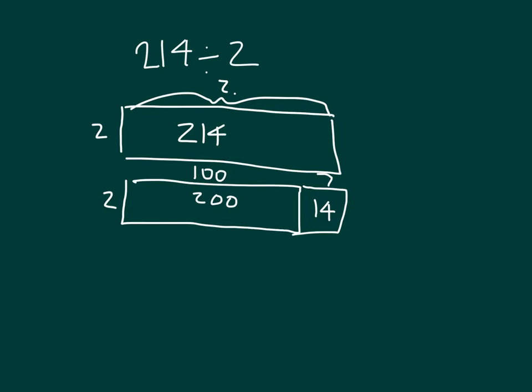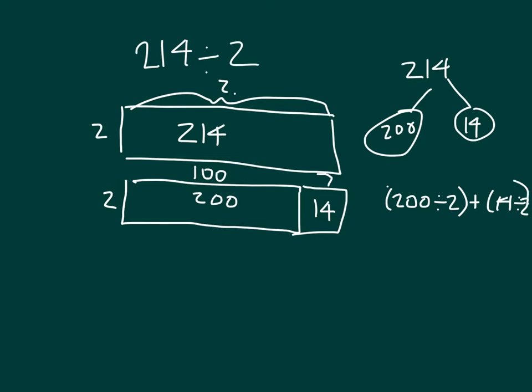Now, what have we done here? We took 214 and if we decompose 214, we broke it apart into 200 and also 14. So we have decomposed that number into 200 and 14. If we look at the division, we have 200 divided by 2 plus 14 divided by 2. And if we follow through to evaluate that, 200 divided by 2 is 100, 14 divided by 2 is 7, and 100 plus 7 is 107. So 214 divided by 2 is 107.